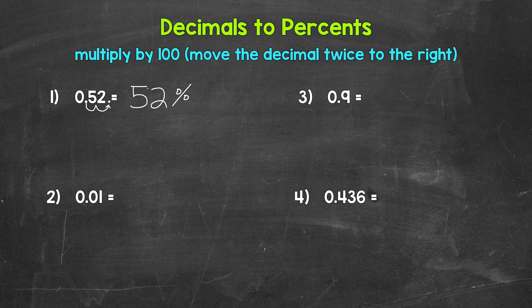Let's move on to number two, where we have 0.01 — one hundredth. Let's multiply by 100 by moving the decimal once, twice, to the right. So it comes after the one now, which gives us one percent. One hundredth equals one percent.